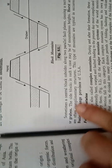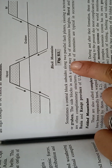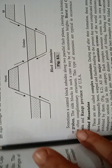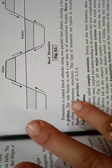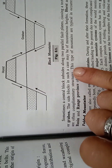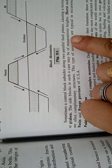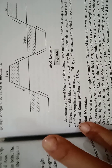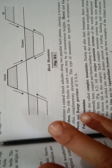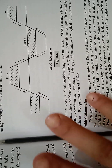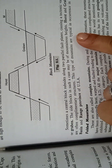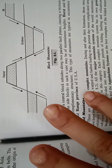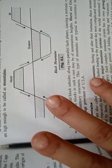Sometimes a central block subsides along two parallel fault planes, causing a tectonic valley or graben. The side blocks in such a case may be of mountainous height. Horst and graben are often complementary structures. This type of mountain is typical in the Basin and Range province of the USA.